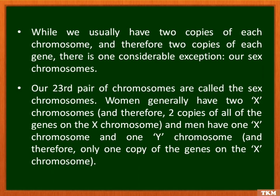While we usually have two copies of each chromosome — that means two copies of each gene — there is one exception: the sex chromosomes, the 23rd pair. Women generally have two X chromosomes, and therefore two copies of all the genes on the X chromosome. Whereas men have one X chromosome and one Y chromosome, and therefore only one copy of the genes on the X chromosome.